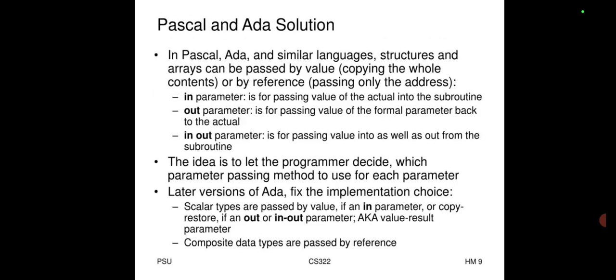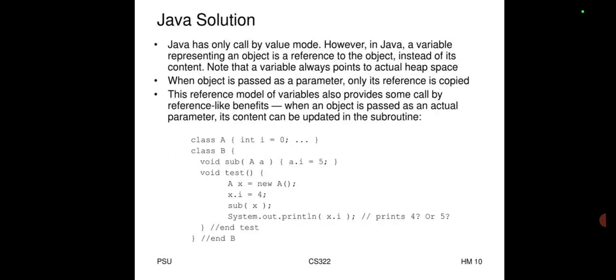Scalar types in Ada are passed by value if an 'in' parameter, or copy-restore if an 'out' or 'in-out' parameter (aka value-result). Composite data types are passed by reference.